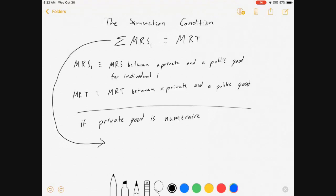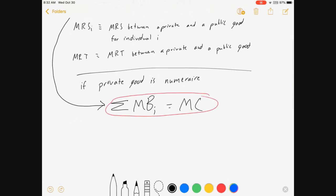then this condition can be rewritten as the sum of the marginal benefits for a public good for a person I is equal to the marginal cost. That is a very usable version of the Samuelson rule in an undergrad class where you're just getting introduced to these ideas.